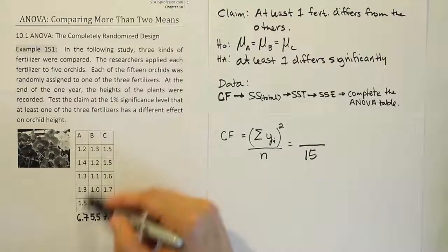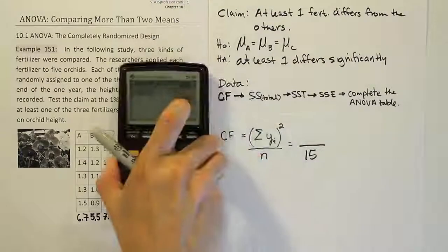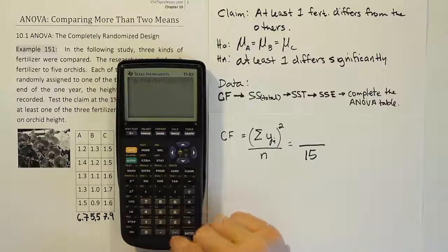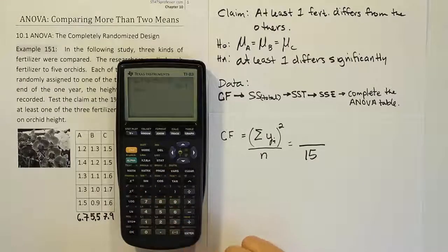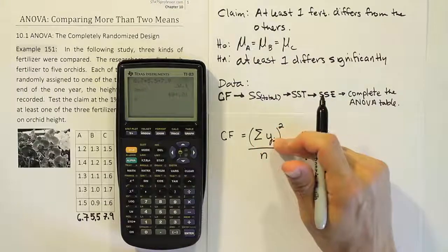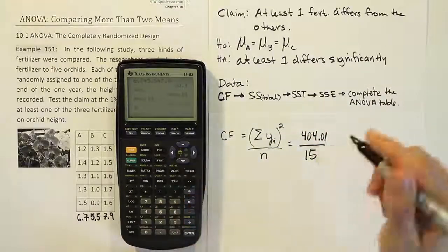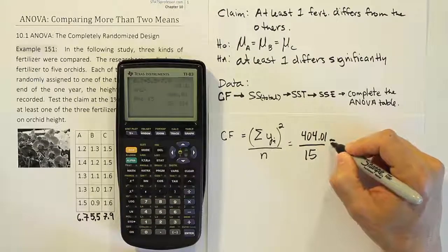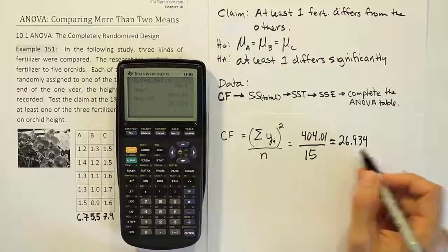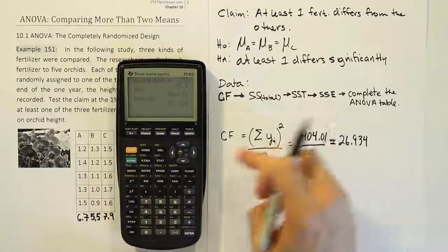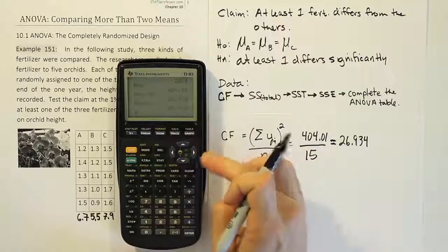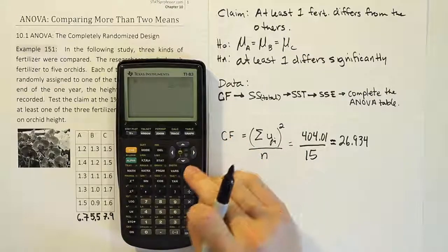Okay, so I've entered my three column totals then. And what I'm going to do then to finish this, the sum of the yis, is I'm just going to add those totals together. So I'll go ahead and say 6.7 plus 5.5 plus 7.9. And when I'm done, I will square that value. So it's 404.01. Okay, so that's the square of the sum of all the y values. And then I'm going to divide it by 15 to get my correction factor. And so we end up with exactly, we won't round this at all, 26.934. I'm actually going to store this number in the calculator because it is so useful for the rest of the calculations.